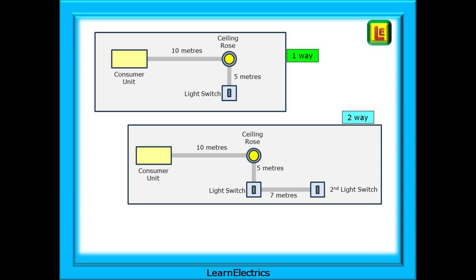To help us understand where the resistance readings come from and what we are measuring, we will look first at a one-way lighting circuit with cable lengths as shown: ten meters from the consumer unit to the ceiling rows and five meters from the ceiling rows to the light switch. Then we'll take a look at the two-way lighting circuit, the same cable lengths as before but now with an extra seven meters between the two switches.